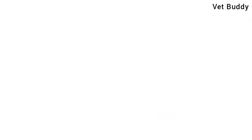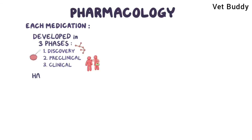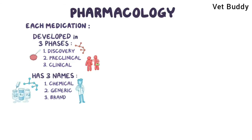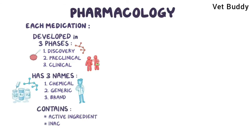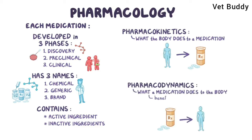As a quick recap: each medication is developed in three phases — discovery, preclinical, and clinical — and has three names: chemical, generic, and brand. It contains an active ingredient along with some inactive ones. Pharmacokinetics studies what the body does to a medication, and pharmacodynamics studies what a medication does to the body, including both beneficial effects and side effects.